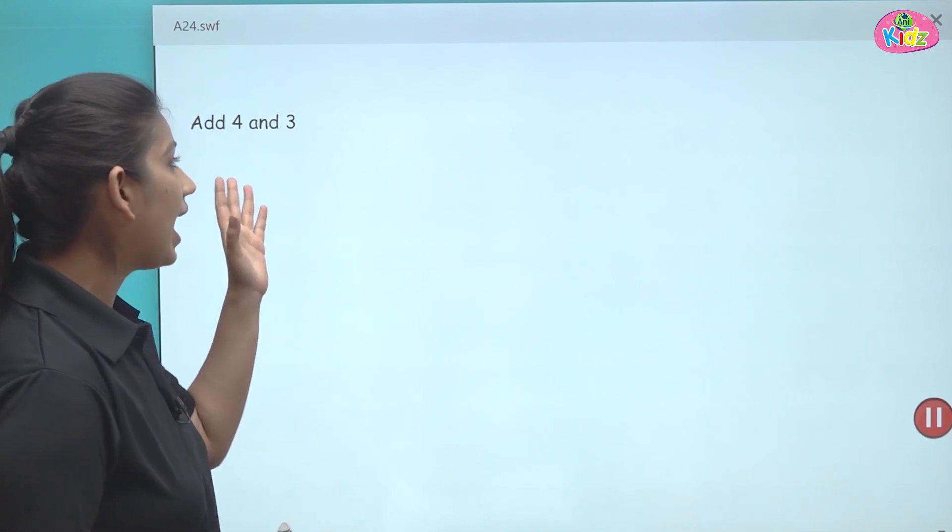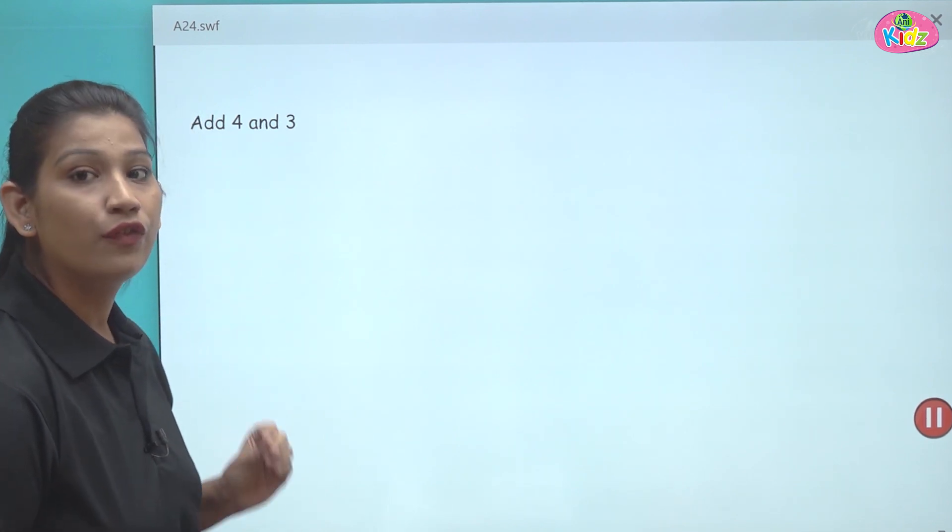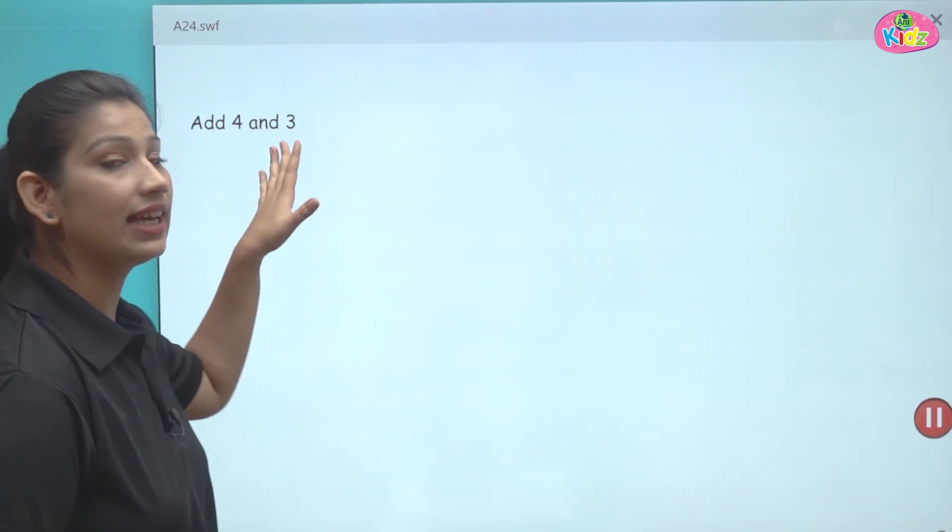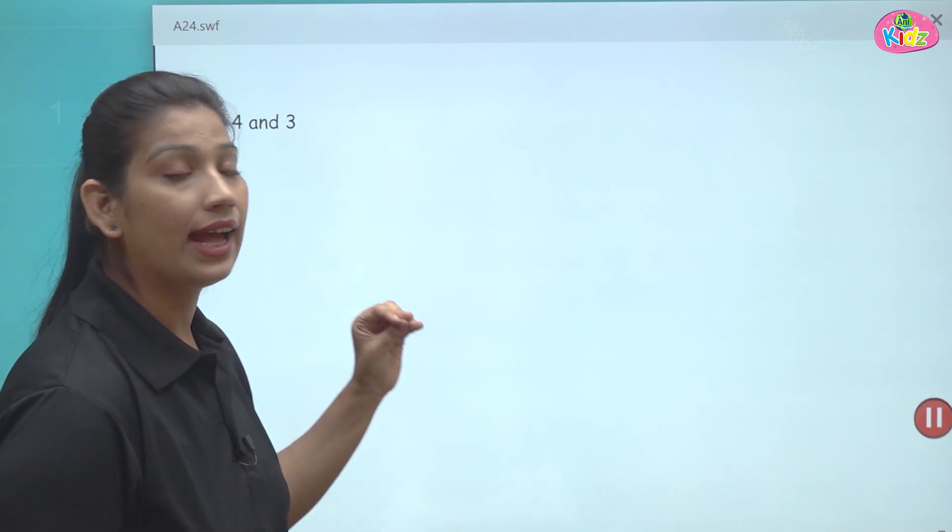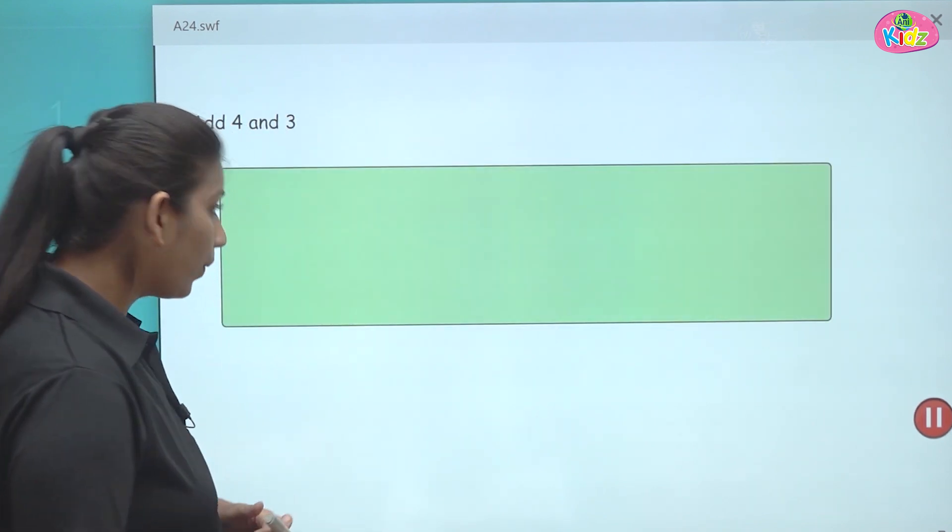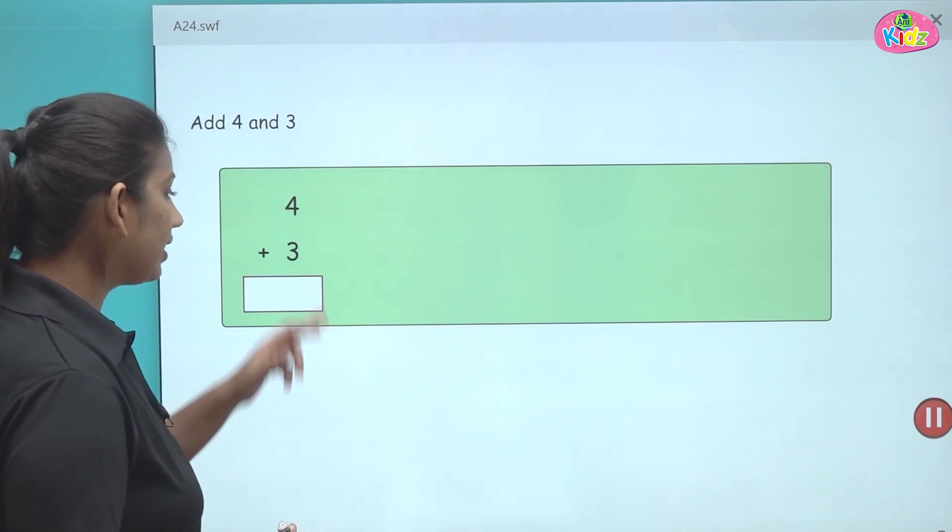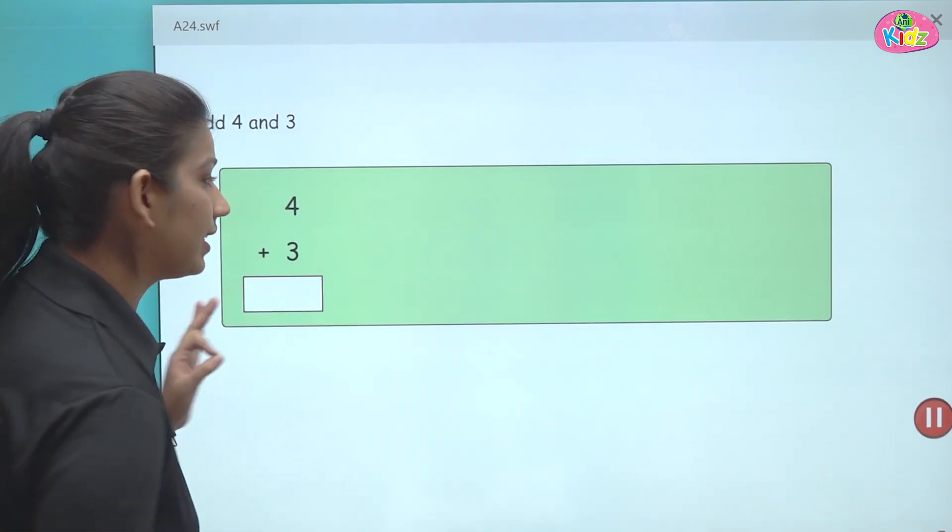Here students you have to add four and three. First we have number four and then three. So we have to add four and three. Let us see how we will write it. We will first write it like this. You have to write like this.